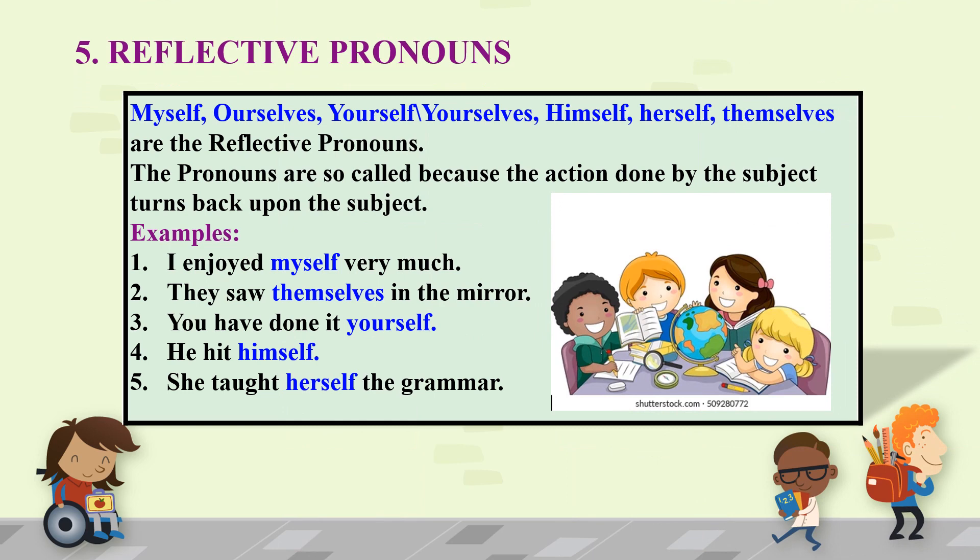Reflective pronouns: Myself, Ourselves, Yourselves, Yourself, Himself, Herself and Themselves are the reflective pronouns. The pronouns are so called because the action done by the subject turns back upon the subject. Examples: I enjoyed myself very much. They saw themselves in the mirror. You have done it yourself. He hit himself. She taught herself the grammar. In these examples, Myself, Themselves, Yourself, Himself and Herself are the reflective pronouns.